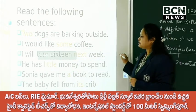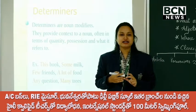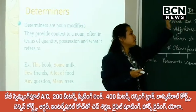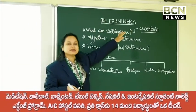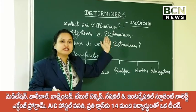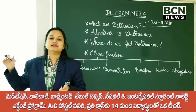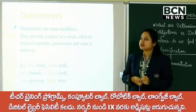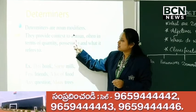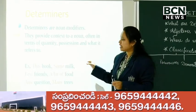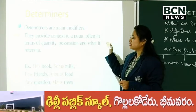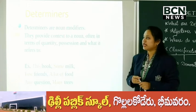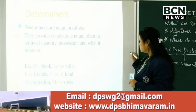Let's move on to the proper definition. By now what we discussed is what determiners are in a general sense. I gave you the example from the word determine and we know it means to ascertain — to fix or confirm something. But what is the actual definition of a determiner? It is a very wide area, it covers a wide range of words. Determiners are noun modifiers — they provide context to a noun often in terms of quantity, possession, and what it refers to.